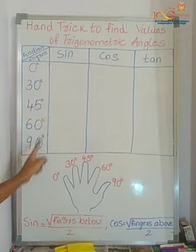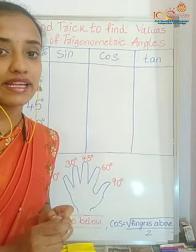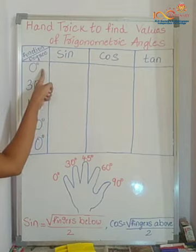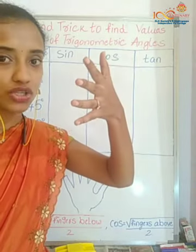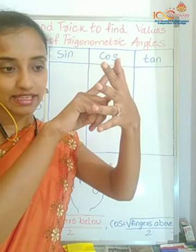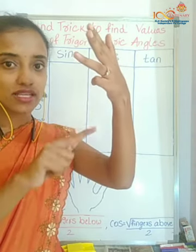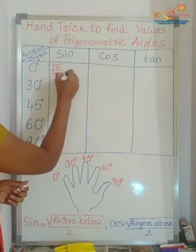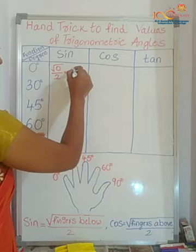According to this table, we have the degrees and the trigonometric functions: sine, cos, and tan. Let's find sine 0 first. The formula is sine equals root of fingers below divided by two. Take out your left hand and fold the 0-degree finger. Below 0 degrees, do I have any fingers? No, I do not. So it is root of zero divided by two, which equals zero. Therefore sine 0 equals zero.